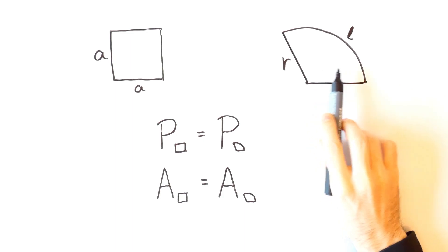In this video we'll see what a circular sector looks like if it has the same perimeter and the same area as the square.